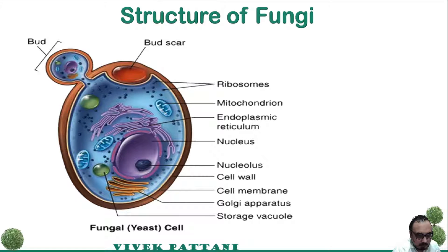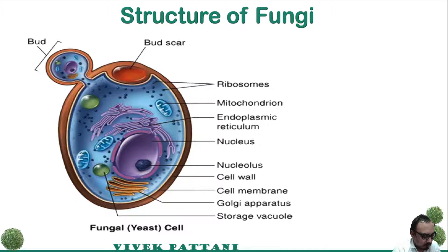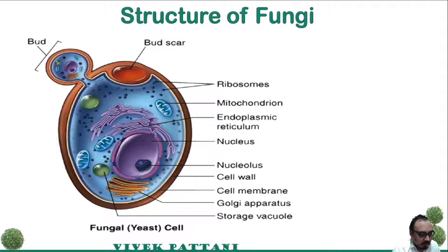The second group, the multicellular ones, are commonly called molds. The whole body of a mold is called the thallus and it consists of two parts: the mycelium and the spores. The diversity of spores will be discussed in the next lecture when we study reproduction in fungi.